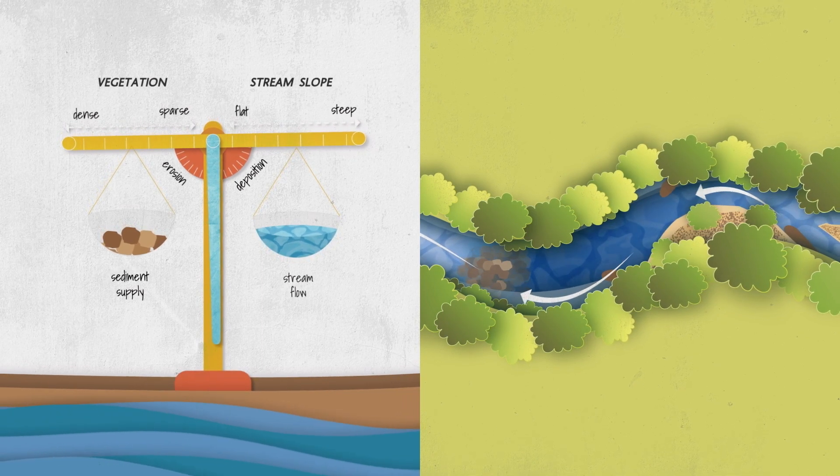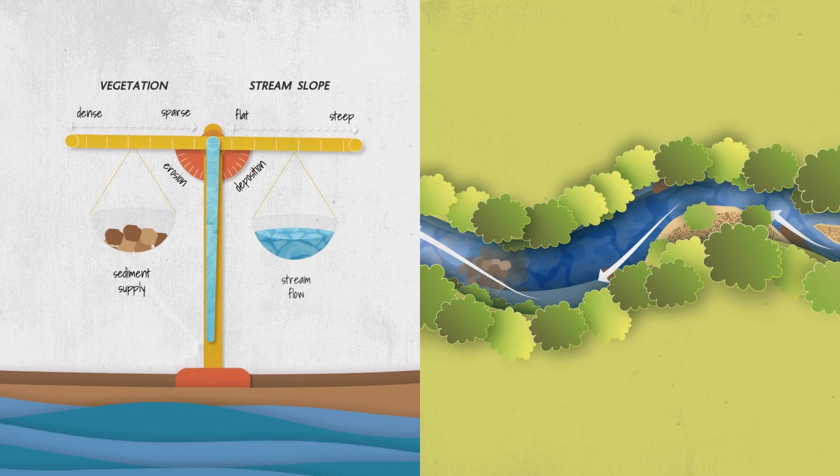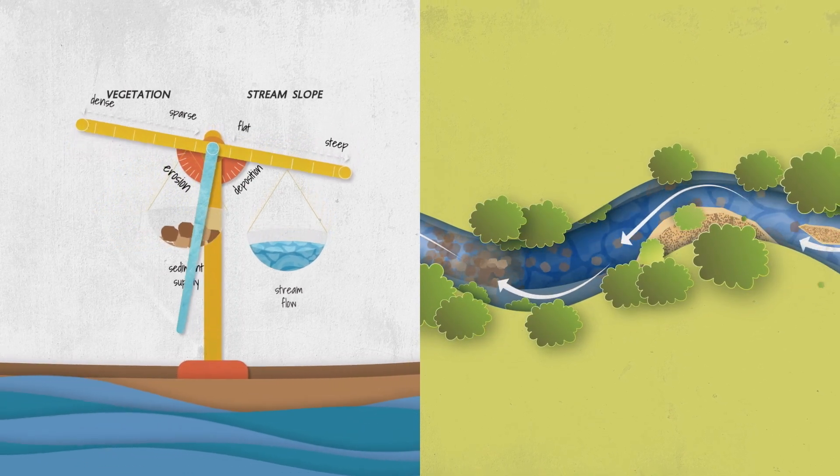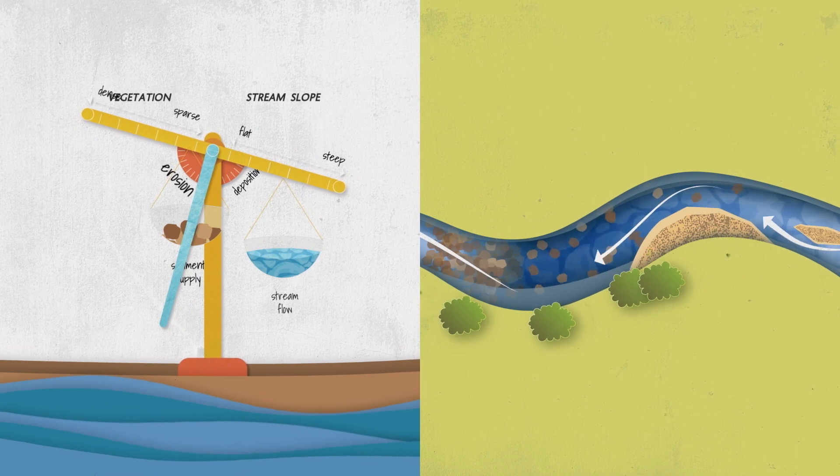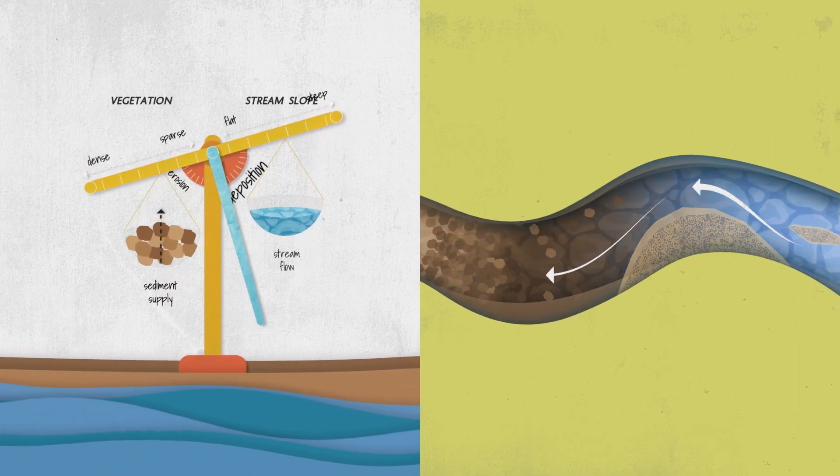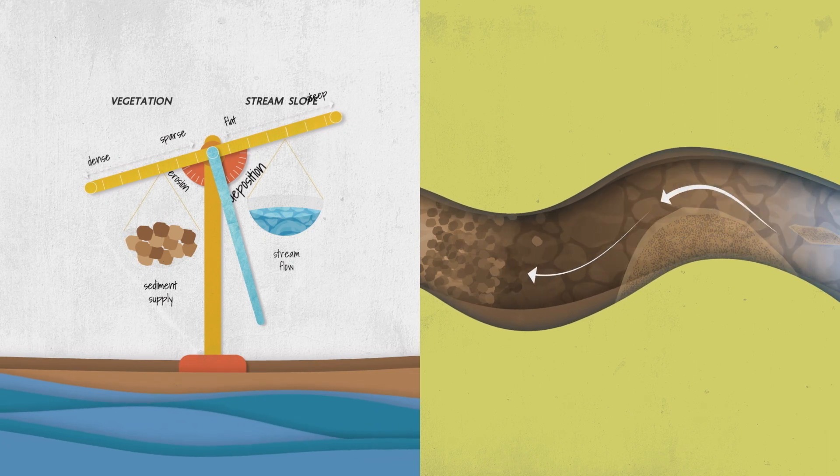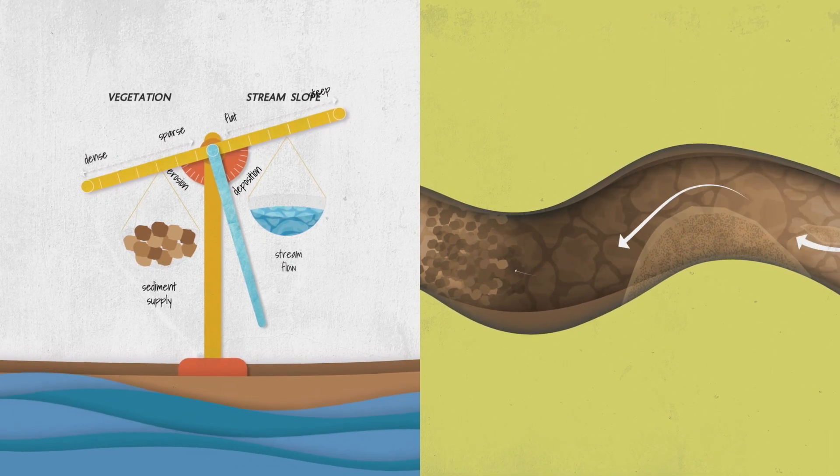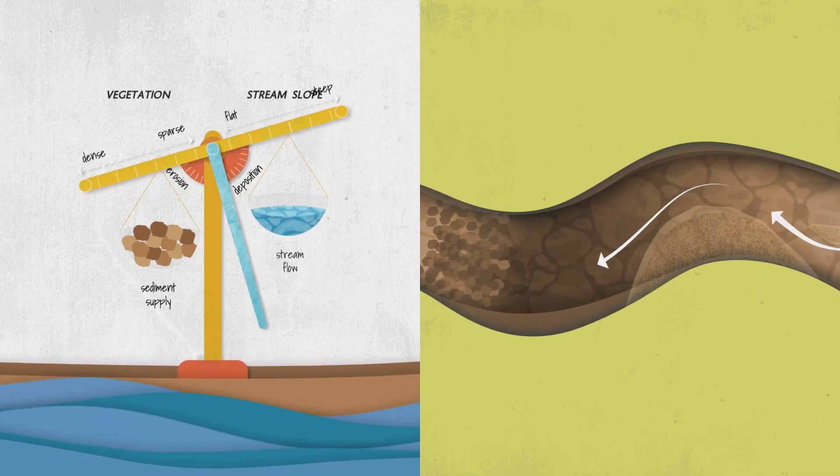However components that vary like stream flow or channel roughness like the removal of forests along the bank create changes to these relationships and cause adjustments to flow path and channel shape. If there is a large change in one of these variables we can see rapid rates of either channel erosion or deposition.